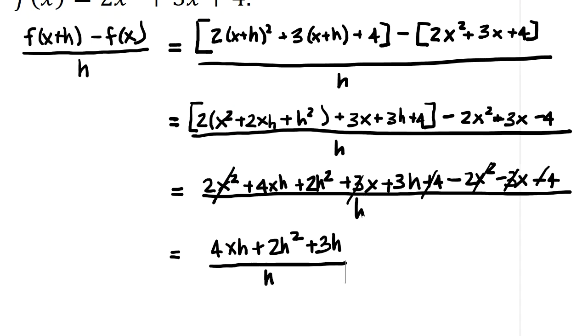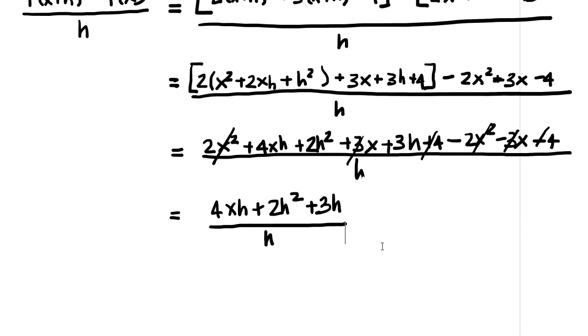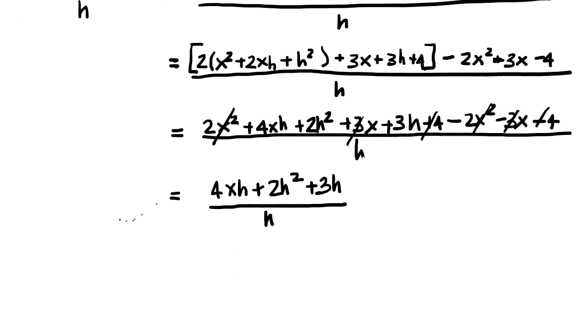And now what I need to do is continue to work this problem. And I'm going to claim I'm going to put an equal sign here and I'm going to write my simplified equation down. Now when I line up the equal signs that's indicating that I think the line above is equal to the line below. So I have 4xh + 2h² + 3h all divided by h.